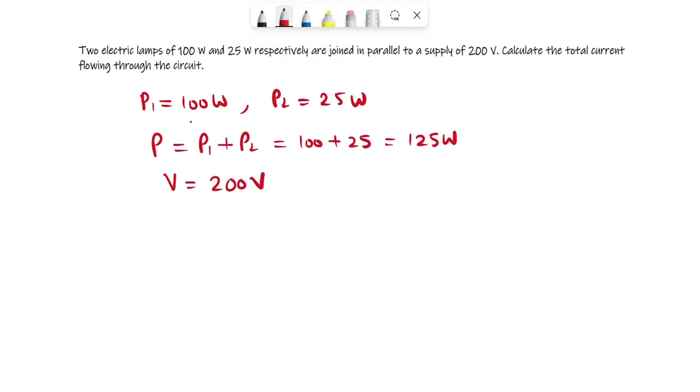We need to find the total current, and total current is dependent on P over V, because we know P equals IV. From this, I can get I, which is nothing but P over V. So 125 watt over 200, and the value you will get is 0.625 ampere.